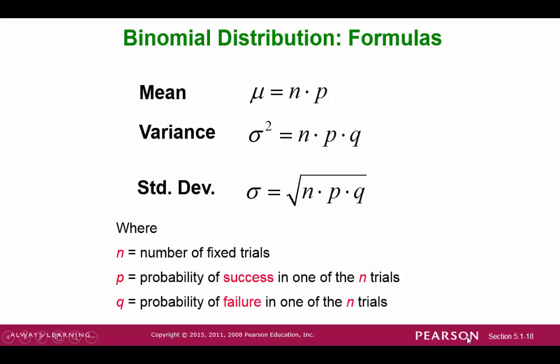If you remember, the formulas for the parameters for other types of discrete distributions, they look pretty complicated. The sum of X times P of X, for example. For binomial distributions, these parameters are a lot simpler. The mean, or expected value, is n times p. The variance is n times p times q, and the standard deviation is the square root of the variance.